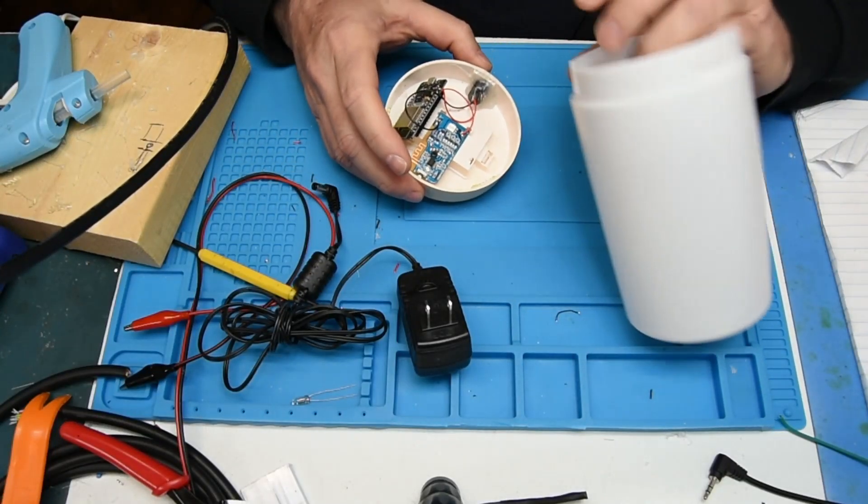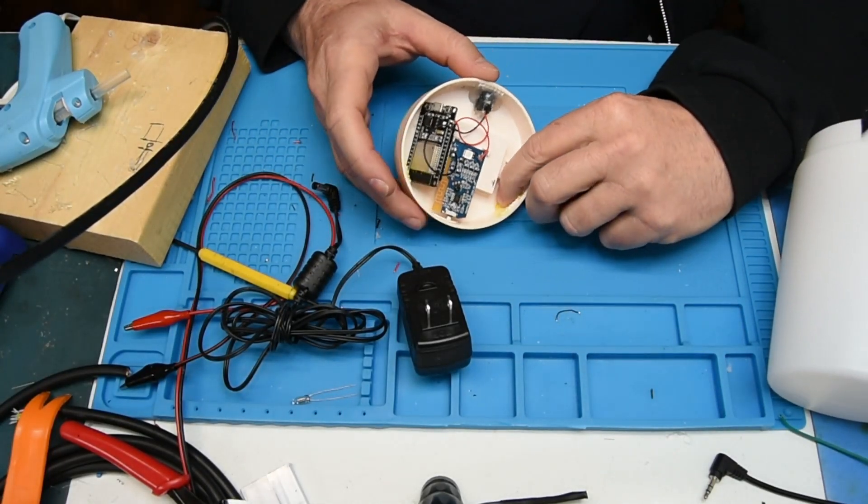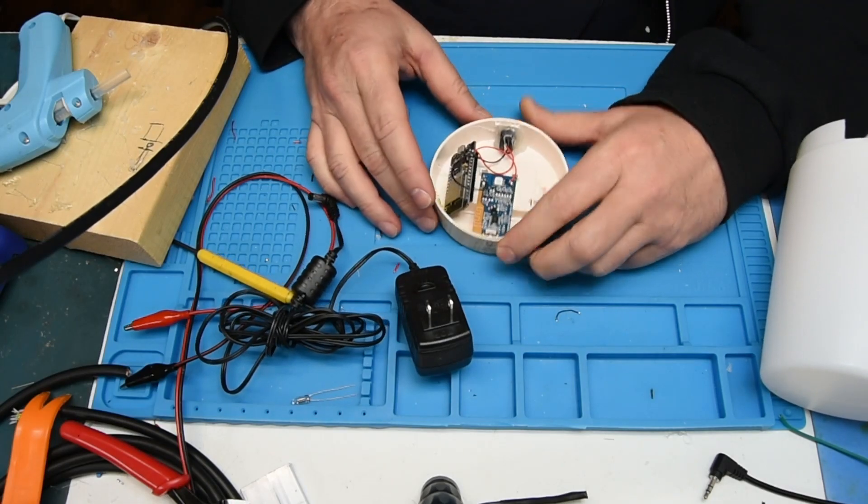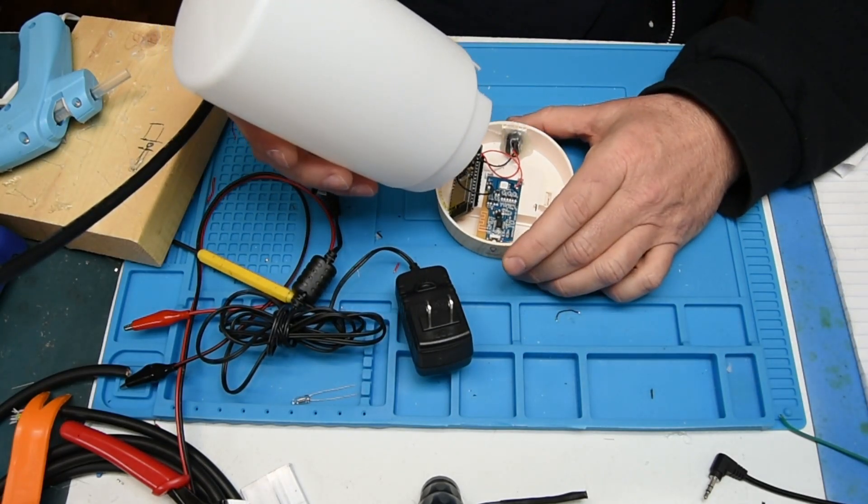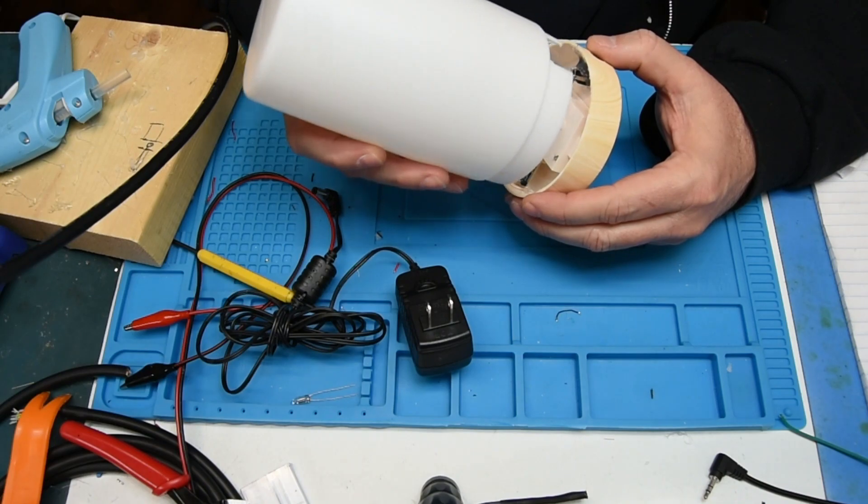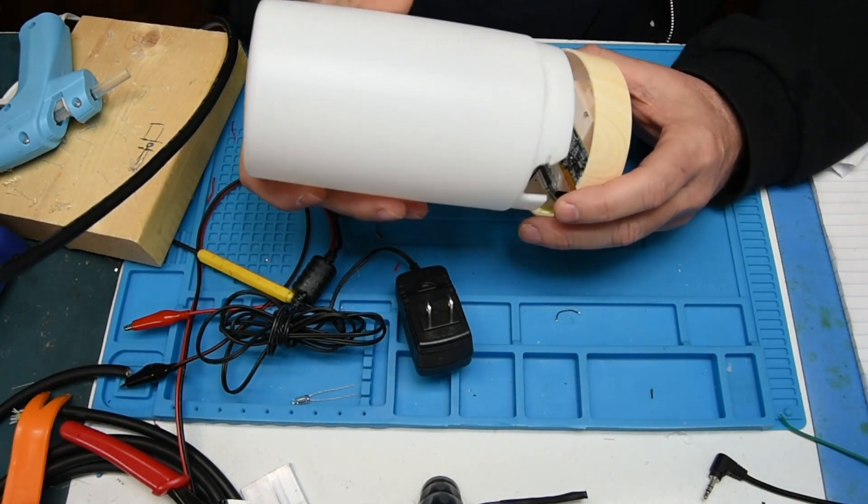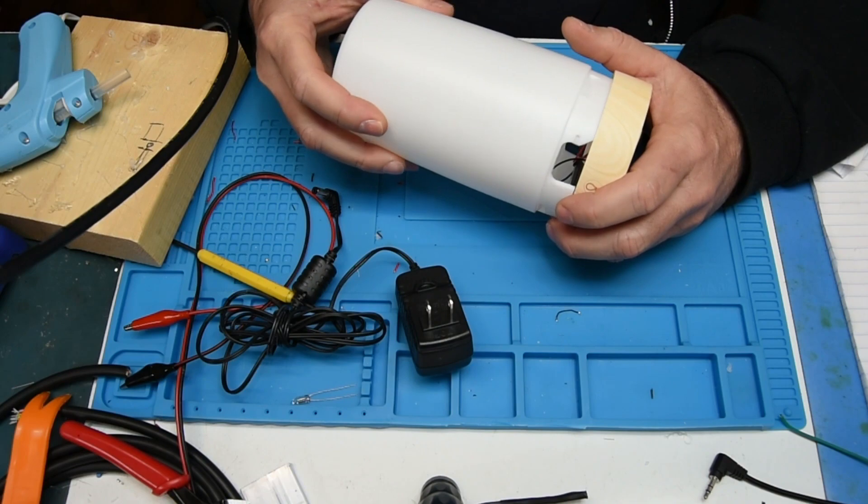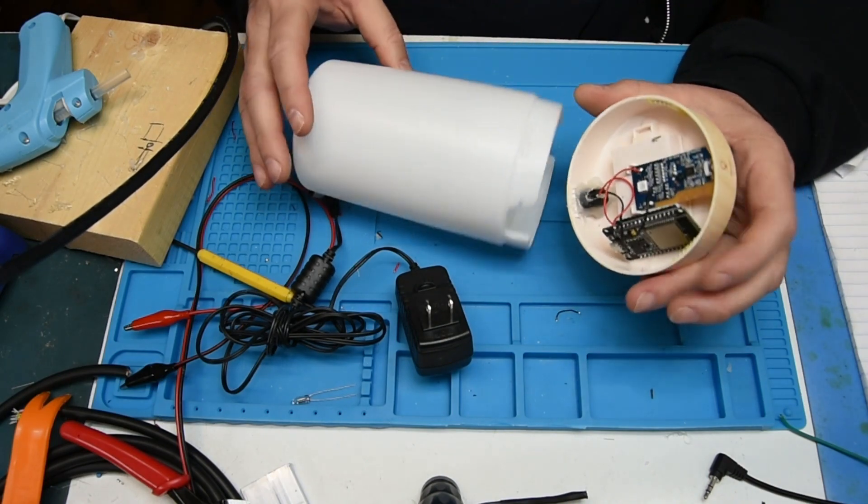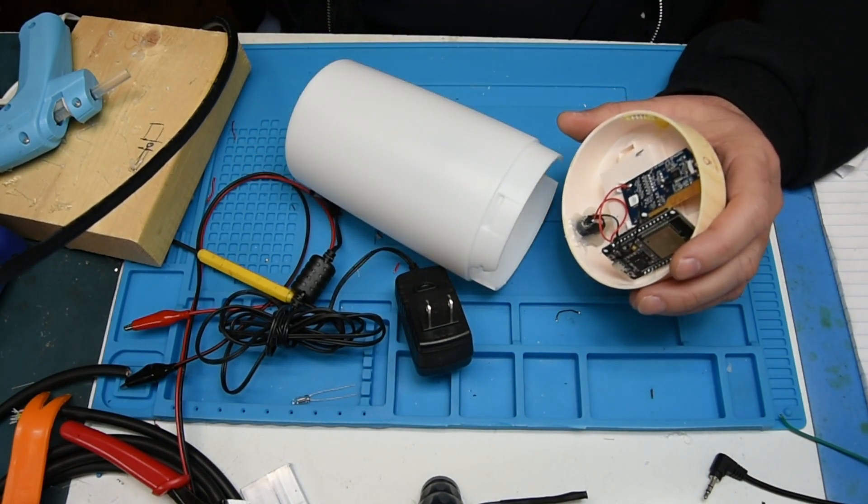When you get yours there's going to be some glue in here and the best way that I found to get this off is to kind of turn it a little bit while it's in the case, kind of cracking that glue, and then if you need to you can slip something in there and kind of pop it out.